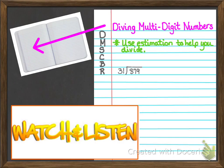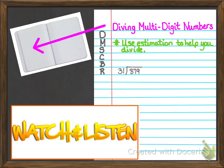What I would like for you to do is just watch and listen for a moment before we start working through this example. On the left side of my paper, you're going to notice here I wrote DMSCBR — that stands for divide, multiply, subtract, check, bring down, and then repeat if we need to continue. This goes with the saying 'Does McDonald's serve cheeseburgers raw,' and I know it was mentioned in a previous lesson.